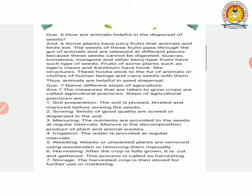Then there is harvesting. After the crop is fully grown, it is cut and gathered. This process is called as harvesting. When the crop is fully grown, it is cut. Then storage. The harvest crop is stored for further use or marketing.